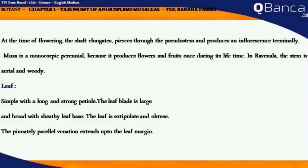At the time of flowering, the shaft elongates, pierces through the pseudostem and produces an inflorescence terminally. Musa is a monocarpic perennial because it produces flowers and fruits once during its lifetime. In Ravenala, the stem is aerial and woody.